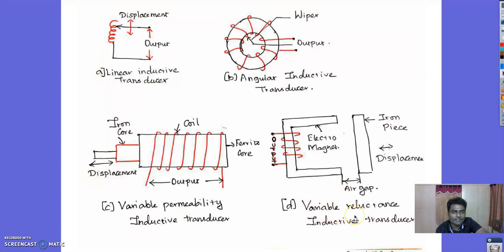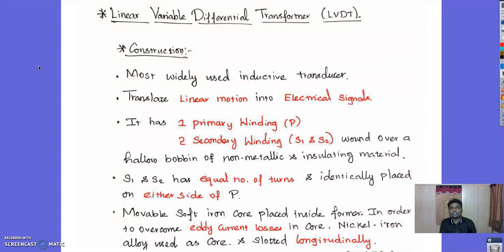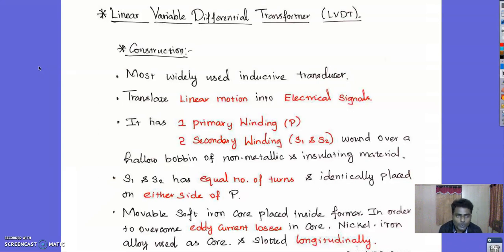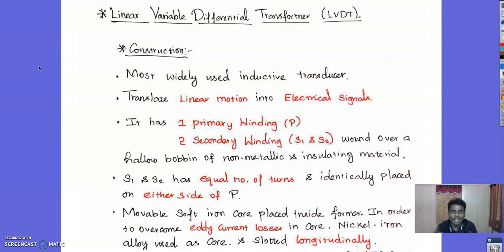The variable reluctance inductive transducer works on the principle of reluctance. Coming to the Linear Variable Differential Transformer or Transducer (LVDT) — the construction is very simple and it is one of the most widely used inductive transducers. It translates linear motion into an electrical signal. It has one primary winding P and two secondary windings S1 and S2, wound over a hollow bobbin made of non-metallic insulating material. The secondary windings S1 and S2 have equal numbers of turns and are identically placed on either side of the primary winding.